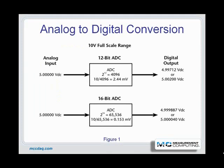Voltage-to-frequency ADCs convert the analog input voltage to a pulse train with the frequency proportional to the amplitude of the input. The pulses are counted over a fixed period to determine the frequency, and the pulse counter output in turn represents the digital voltage.